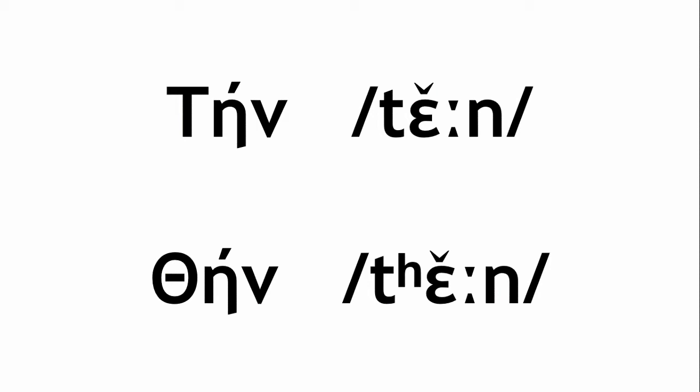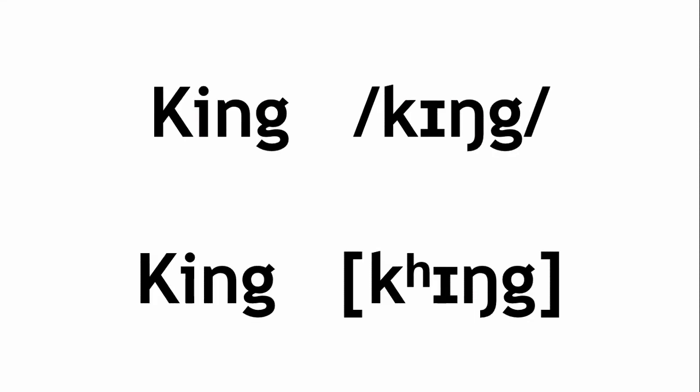Something you may have noticed over the past few examples is the usage of brackets. As a rule, a phonemic transcription will always use slashes to bound the pronunciation, while a phonetic one will use square brackets. Using this system allows linguists to include both phonetic and phonemic transcriptions in their work, without having to declare which it is every time. It also means that as a reader, you can estimate how accurate the transcription is, as a pronunciation bounded in square brackets would be far more precise than one using slashes.